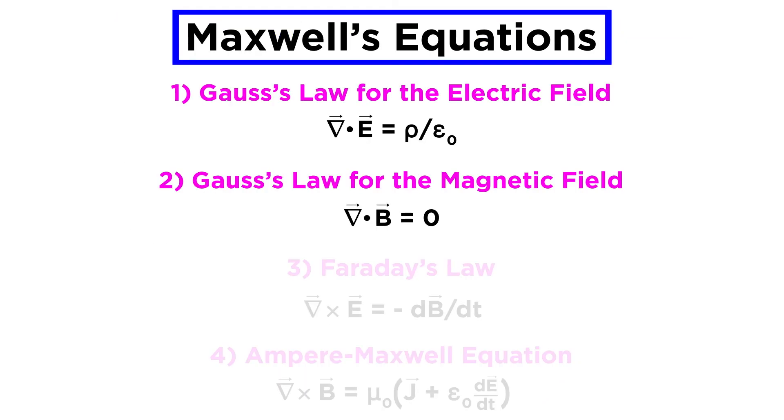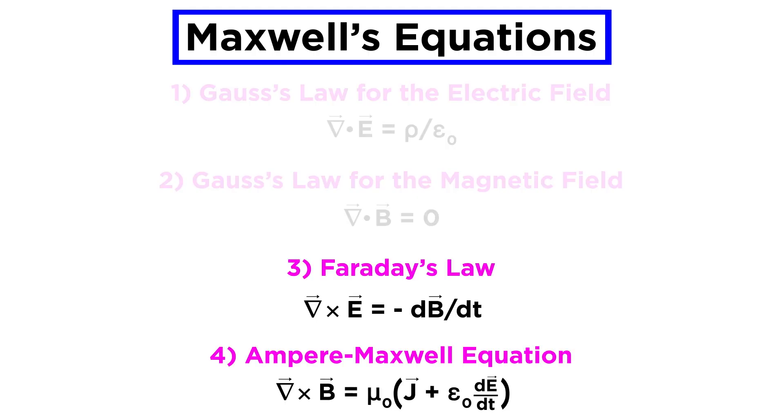With that we complete our overview of Gauss's law, which represents two of Maxwell's equations. The final two of Maxwell's equations deal with the dynamics of electromagnetism rather than the static picture that Gauss's law operates in, so let's move forward and examine Faraday's law next.